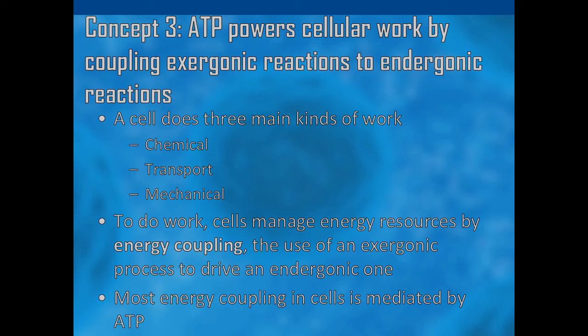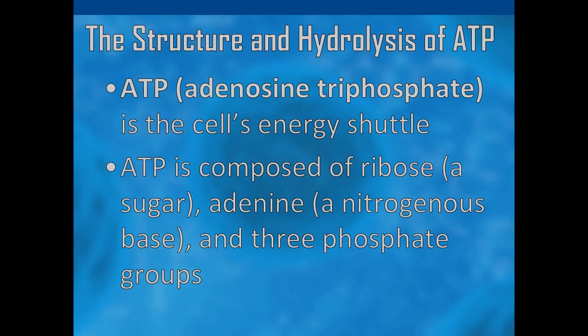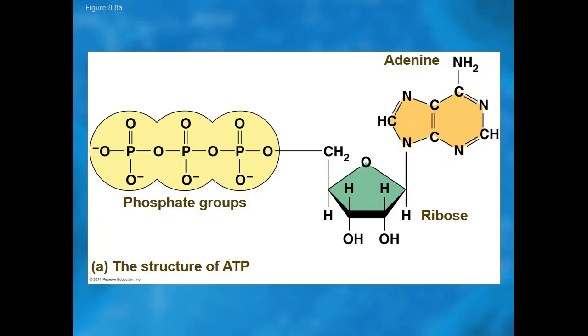ATP combines the process of giving off and taking in energy in order to do work — work that may be chemical, transportative, or mechanical in nature. Without ATP, no work will ever be done inside the cell. Adenosine triphosphate, or ATP, is the primary carrier of energy in cells. The structure of ATP is a nucleoside triphosphate consisting of a nitrogenous base adenine, a ribose sugar, and three serially bonded phosphate groups. ATP is commonly referred to as the energy currency of the cell, as it provides readily releasable energy in the bond between the second and third phosphate groups.